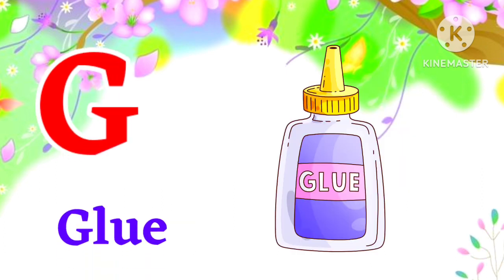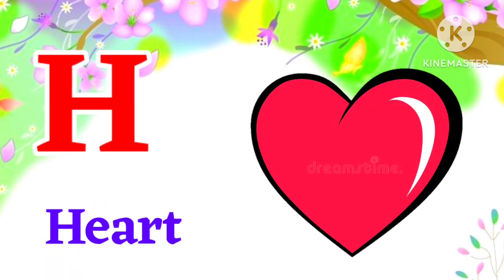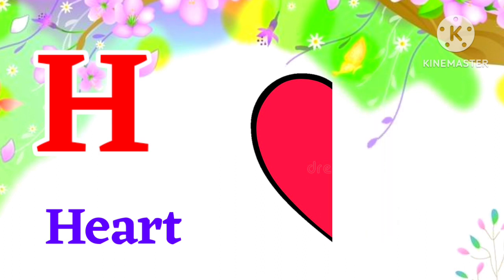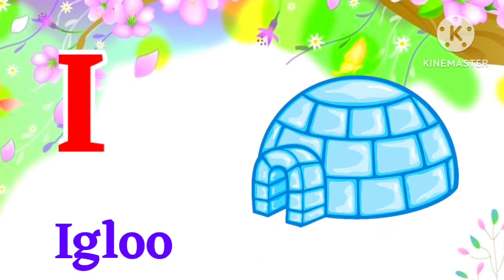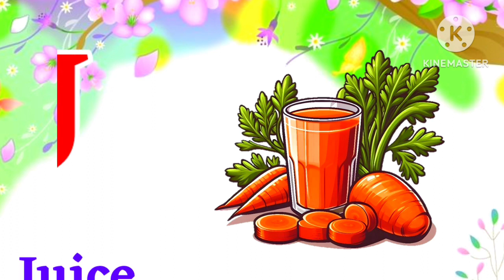G for glue. Glue means glue. H for heart. Heart means dil. I for igloo. Igloo means badpilagar.